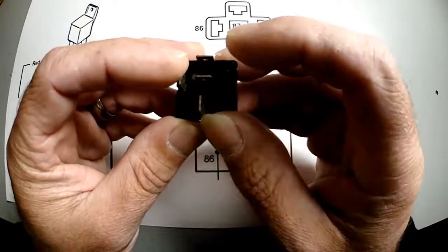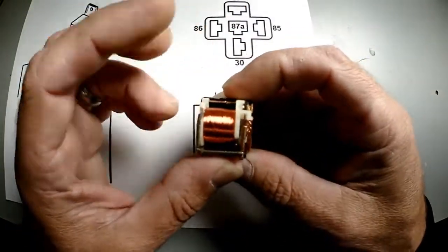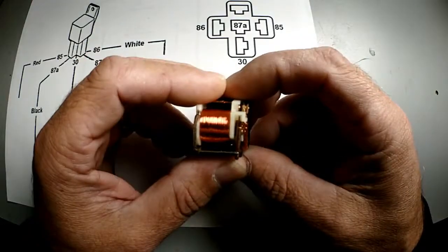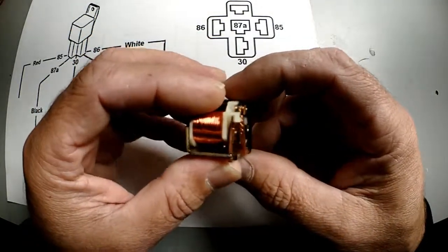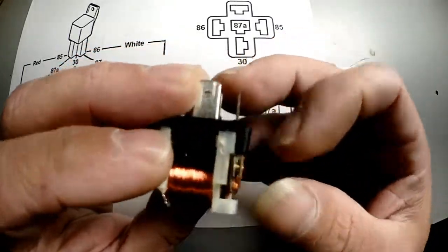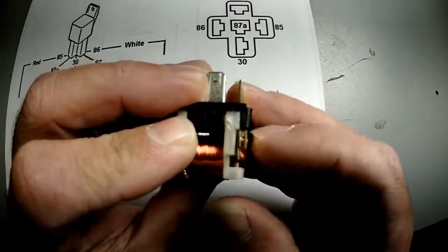This is 86, this is 85. Flip it over, there's the coil I'm talking about. When they get power, this essentially is going to become an electromagnet. It's going to make this tiny little switch over here.